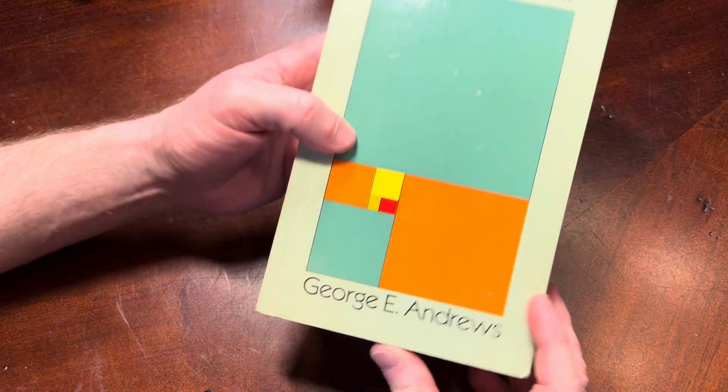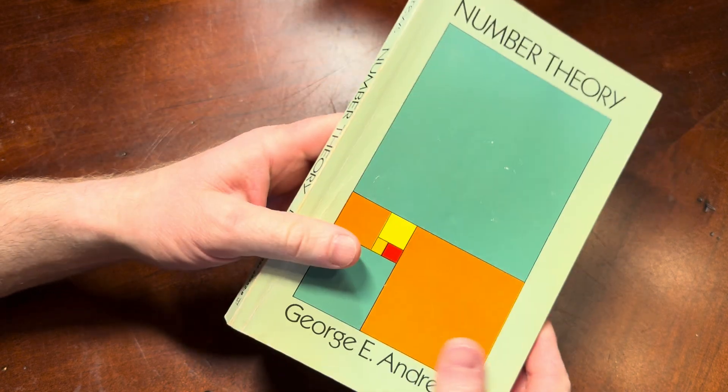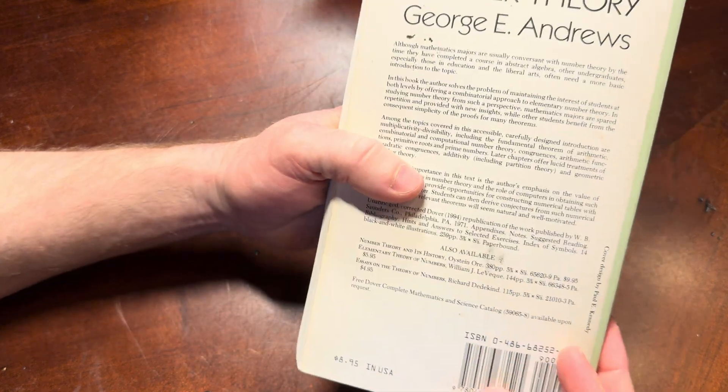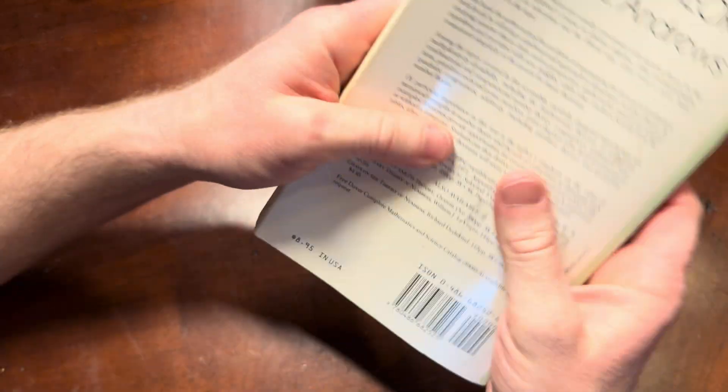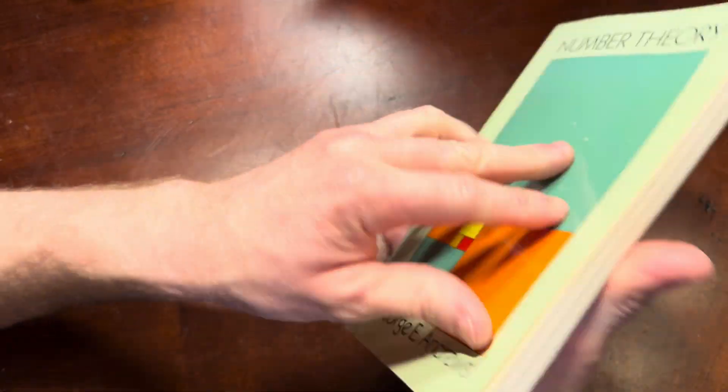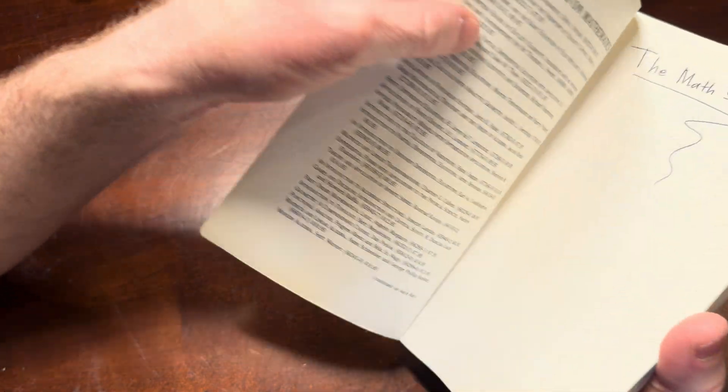This is Number Theory by George E. Andrews, and in this short video we're going to take a brief look at this book. So this is a Dover book. That means it's a reprint of an older book in paperback form. That's what Dover does.